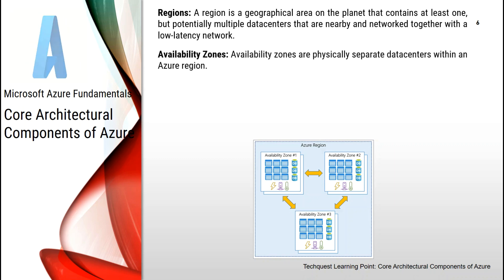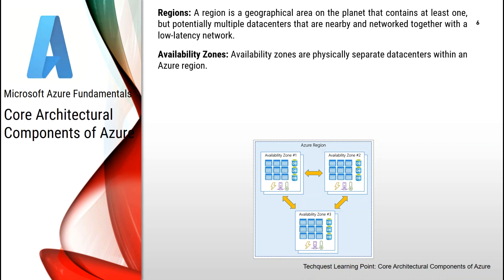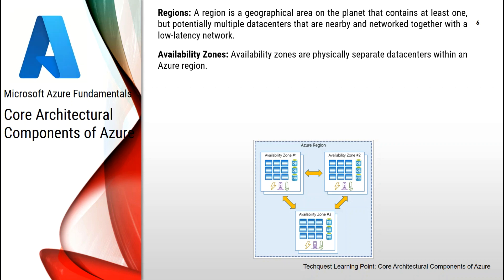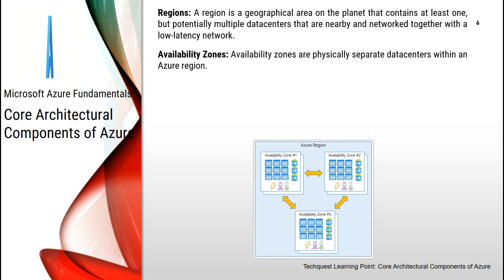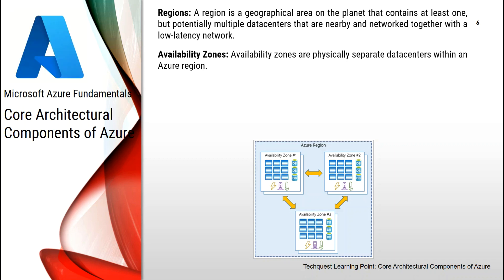Availability zones are physically separate data centers within an Azure region. Each availability zone is made up of one or more data centers equipped with independent power, cooling, and networking. An availability zone is set up to be an isolation boundary.